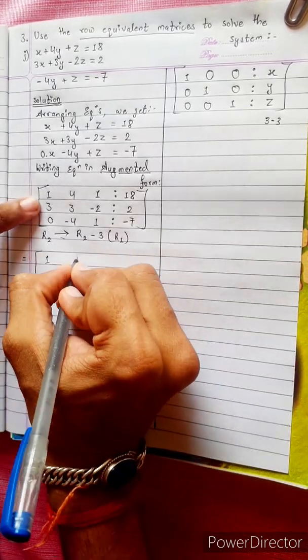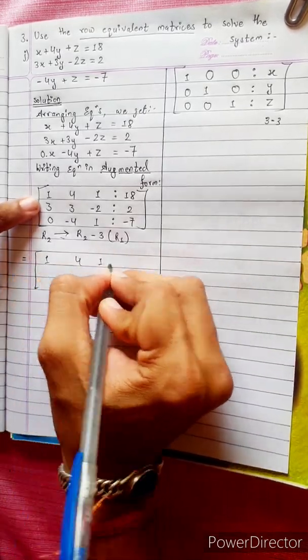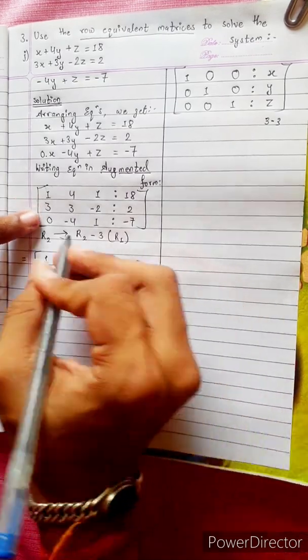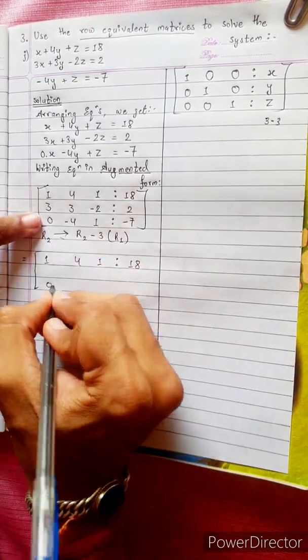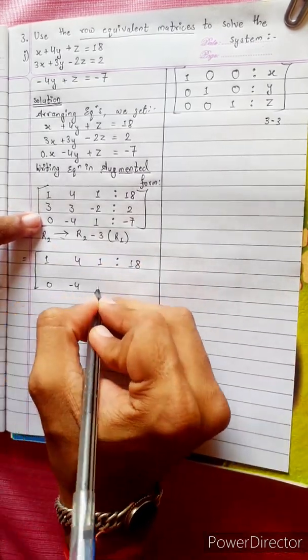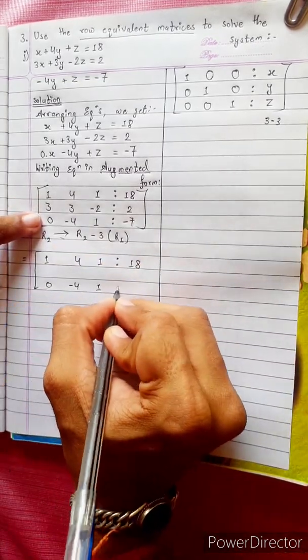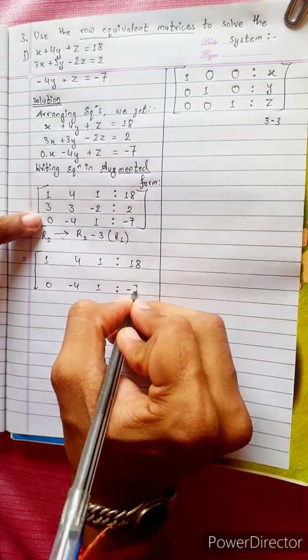The first row stays the same: 1, 4, 1, 18. The third row also stays the same: 0, minus 4, 1, minus 7.